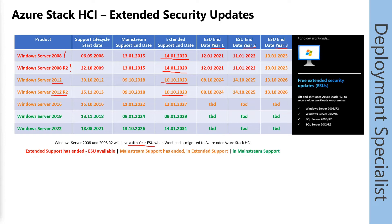You have to pay $10 per core per month for the Azure Stack HCI OS to get this Azure functionality, and you have to ensure that your Windows Server workload is licensed correctly. To receive extended security updates, you have to use the Windows Server subscription model. Or you can choose bring your own license, but then you need Software Assurance included for your Windows Server license. You can add Software Assurance to an OEM license, and then you will have extended security updates for your Windows Server workload on Azure Stack HCI.